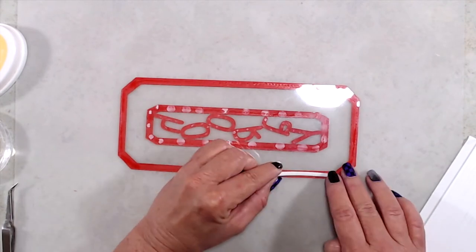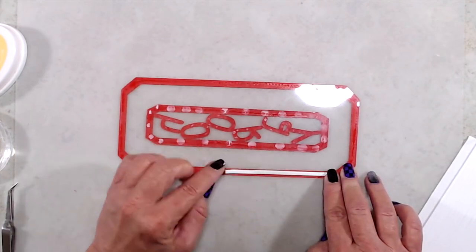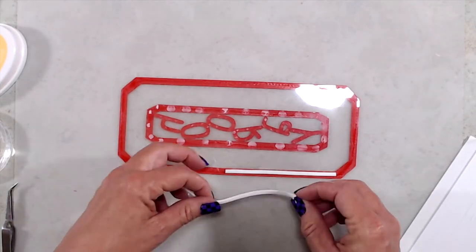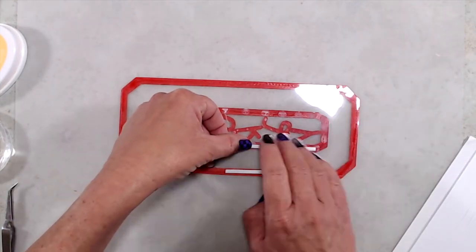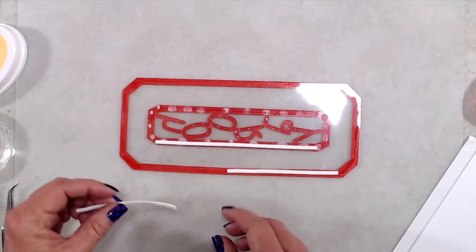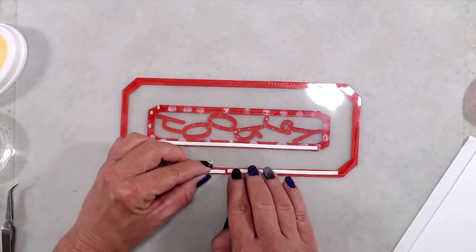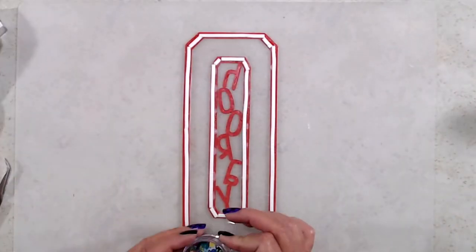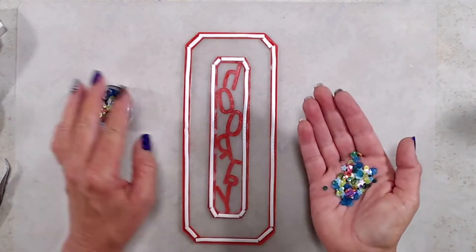Moving right along, the next step was I put my foam strips around the outer frame as well as the inside frame because I wanted to create a channel so that my shaker bits only stayed on the outside—it didn't go behind the word hooray. And the second mistake that I made was I removed the release paper from my foam strips before I put my sequins in.